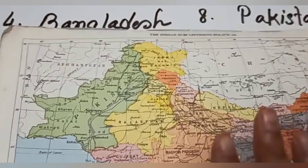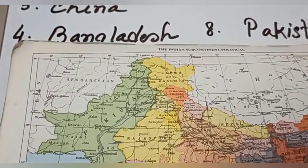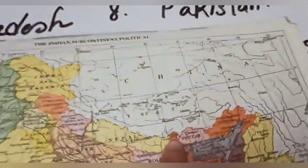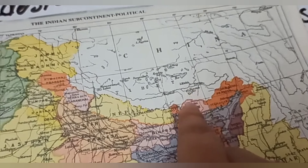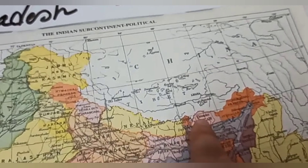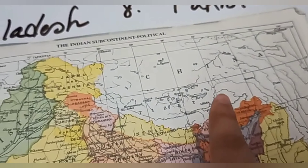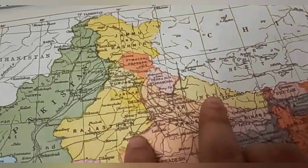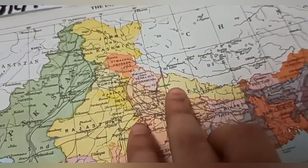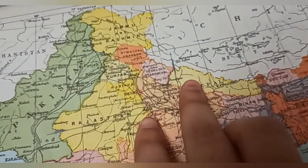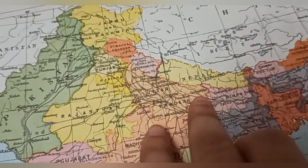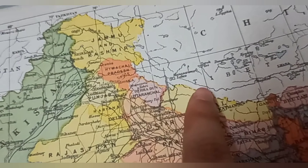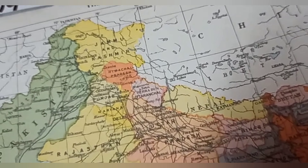India also maintains cooperation with neighbouring countries for various joint projects, like the Indo-Bhutan project for the river Chukha, a hydropower project system. There are also Indo-Nepal river projects based on different rivers that have their source in Nepal and flow into India. You can see many rivers marked in black, having their sources there and flowing into India.